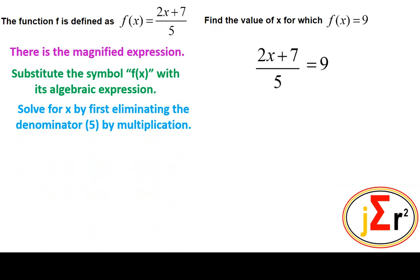All we need to do is solve that equation to find the value of x. First, let us eliminate the 5 that we are dividing by, by multiplying by 5. We will multiply by 5 on the right-hand side also, so 5 will be eliminated from the left-hand side.